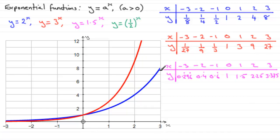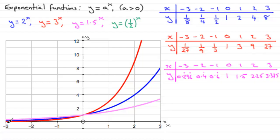Comparing this graph to the others, it is lower than y equals 2 to the power x on the right side of the y-axis, but on the left of the y-axis it is above the other two graphs. Again, it will never cross the x-axis — the x-axis remains an asymptote.